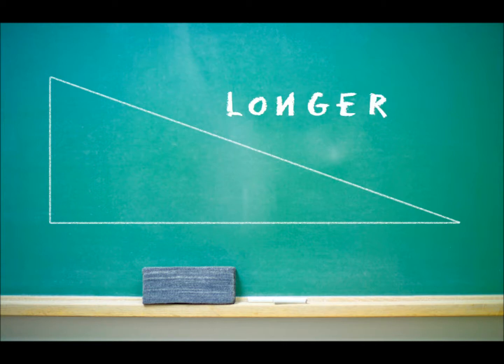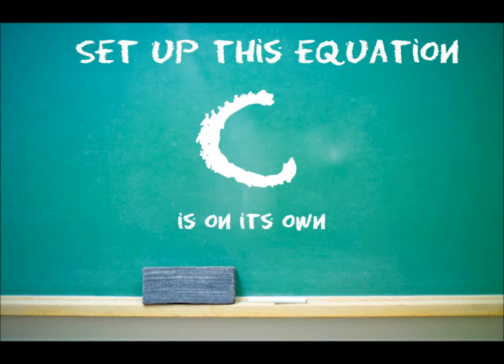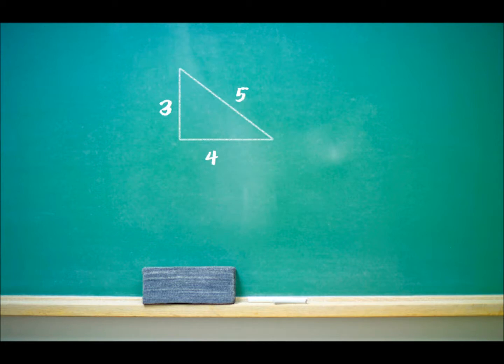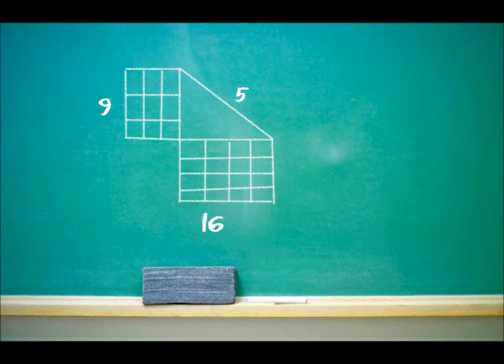So to find a missing side, here is what you're gonna do. Set up this equation, C is on its own. Of the three numbers, it is always alone. It goes A squared, plus B squared, equals C squared. That's right.